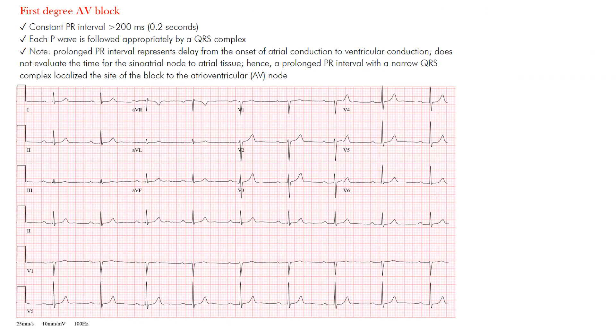So first degree AV block — what's going on here? This is a minor AV conduction defect. This is a partial block at or below the AV node.